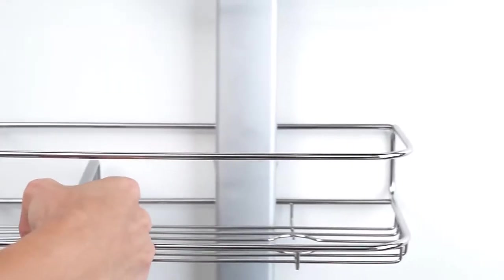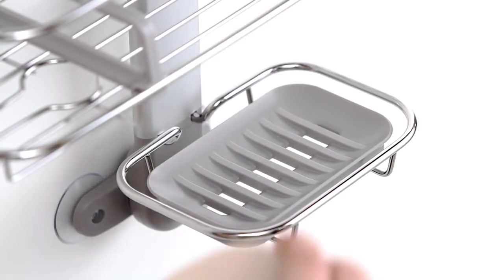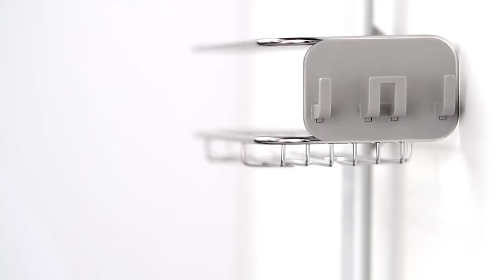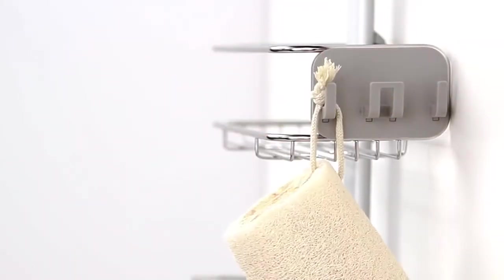There's a movable divider that helps keep small items or grooming tools from falling over and a quick dry soap dish that drains water completely so your soap stays dry and lasts longer. Convenient storage hooks can hold a razor or a loofah so you can keep your shower essentials close.